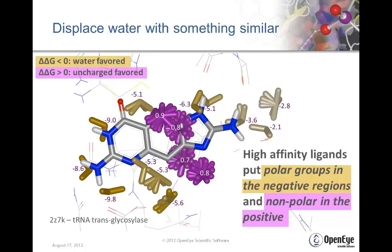In our experience, high affinity ligands put polar groups in negative regions and nonpolar groups in the positive regions. You can see how well this ligand adopts similar geometry to what the solvent was doing in the binding site in the polar regions, and how it puts a nonpolar aromatic ring in the region where the uncharged probe predominates, shown in purple.